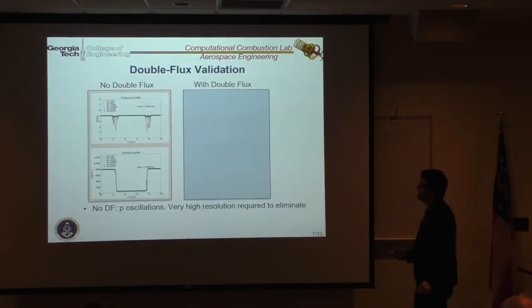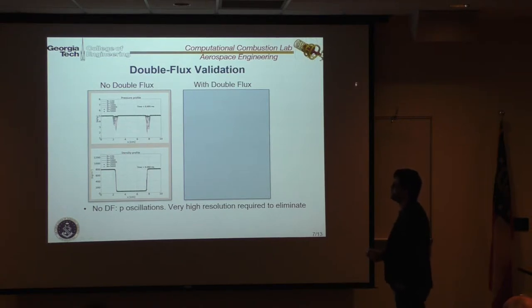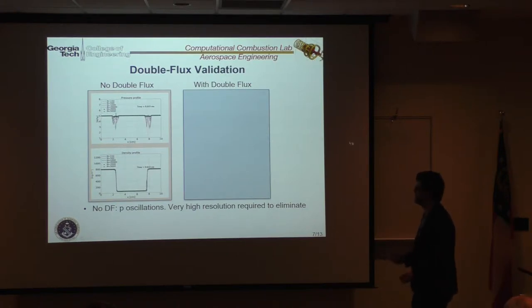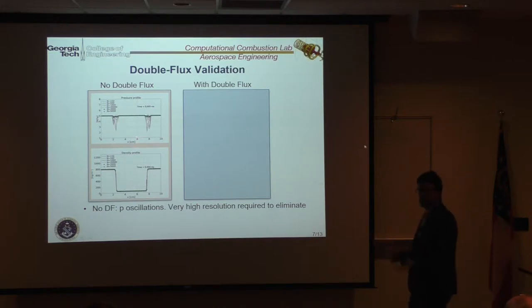Now, if you don't use the double flux, even with the most dissipative scheme that we have in our code, this is what you get after few time iterations. So, you are not able to maintain pressure equilibrium and velocity equilibrium across your contact discontinuity. And then, this affects everything, as you can imagine.